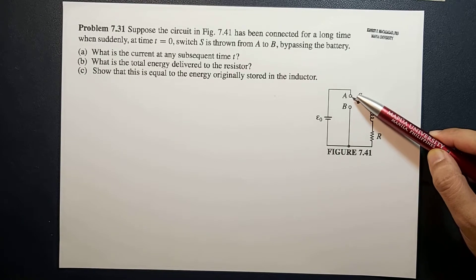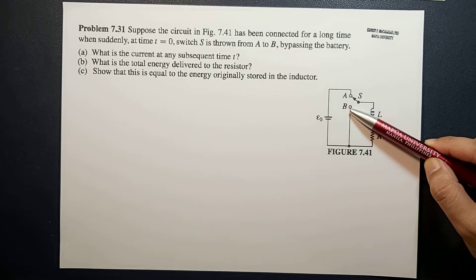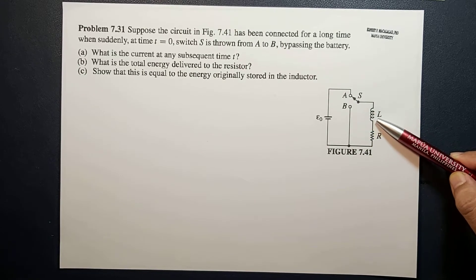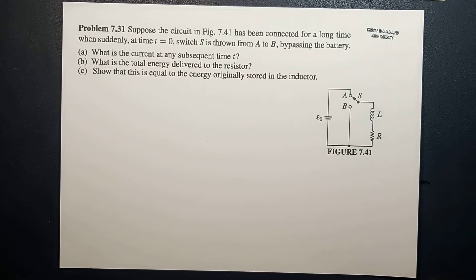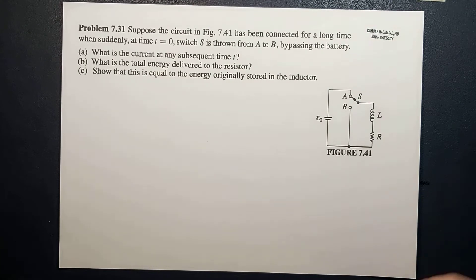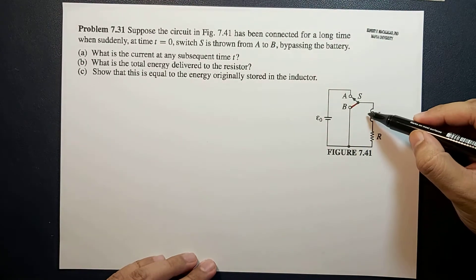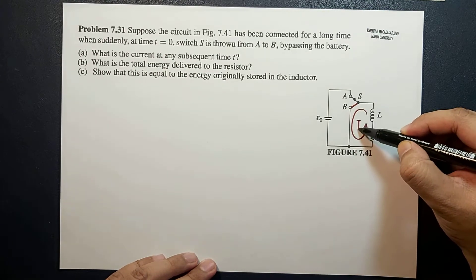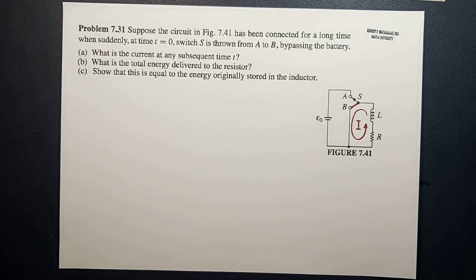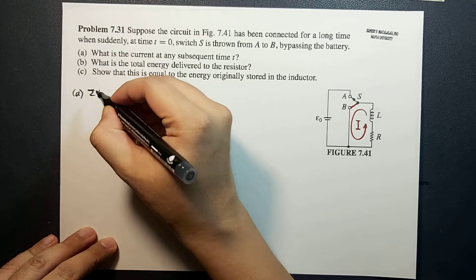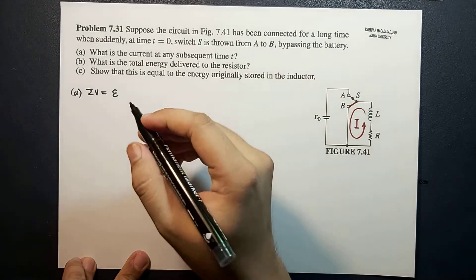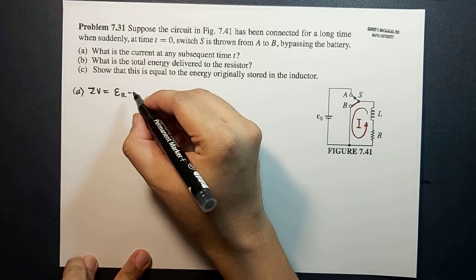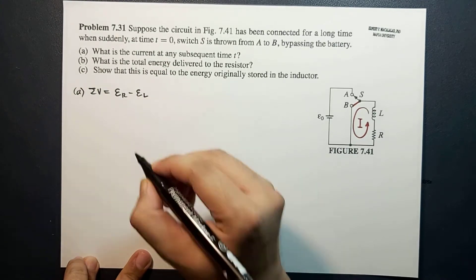Once the switch is thrown from A to B, the energy stored in the inductor will now be delivered to the resistor. When this switch is closed, current will flow in this direction. This is a single loop circuit, and by Kirchhoff's rules, the total potential in that loop will equal the EMF delivered to the resistor minus the EMF stored in the inductor.